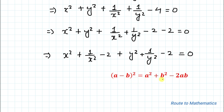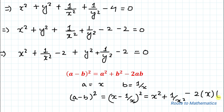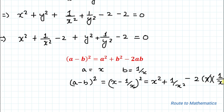Now we will apply an algebraic identity. The identity is: (a - b)² = a² + b² - 2ab. To apply this here, let a = x and b = 1/x. So (x - 1/x)² = x² + 1/x² - 2·x·(1/x). The 2x cancels out, giving x² + 1/x² - 2, which is exactly the term in our equation.